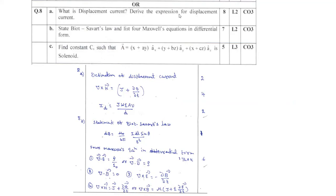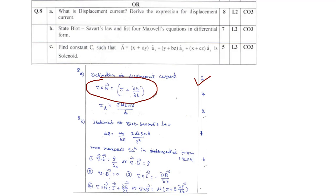Question 8a: What is displacement current? Derive an expression for displacement current. First of all, you have to mention the definition of displacement current. The definition will be allocated two marks. This is the general expression for displacement current. You have to reach up to this expression: del cross H is equal to J plus ∂D/∂t.